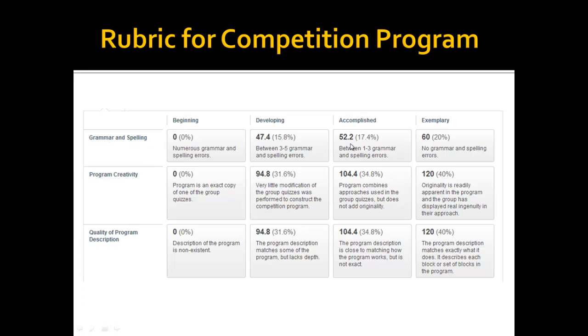The big thing, grammar spelling is going to be 20%. When you're handing it in and you want it to be professional, you want to make sure that you spell things right and that your grammar is correct. 40% of your grade is going to be program creativity. So if you use the exact copy of one of the group quizzes, that's not being creative. I want you to think outside the box a little bit. If you modify the group quizzes just a little bit, that's a little bit creative. But what I really want is originality is readily apparent in the program, and the group has displayed real ingenuity in their approach. For example, you did something with the touch sensor and the light sensor already. If you do something with the touch sensor, the light sensor, and you add the ultrasonic sensor in somehow, that might be originality. So think about how you can be a little more original from the group quizzes for your competition program.